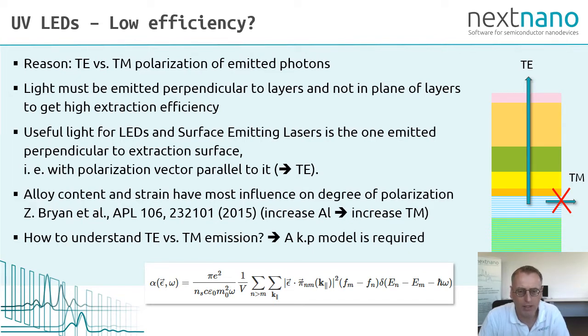However, to get UVC LEDs, we have to increase the aluminum content in the aluminum gallium nitride layers. Unfortunately, this increases the fraction of the transverse magnetic versus the transverse electric polarized photons. So in order to improve these devices, we have to understand the mechanism how TE and TM photons are generated. And this can be done by using a so-called k dot p band structure model.